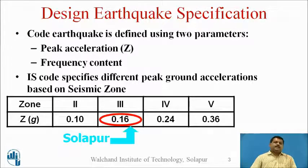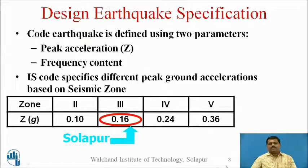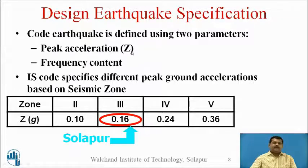Now let us see what is the earthquake design specification. What is the earthquake which is considered in the code? That code earthquake is defined using two parameters. Most important is the peak acceleration — peak ground acceleration, that is Z, which is specified in the code. Second is the frequency content. The code earthquake is defined by using these two parameters.